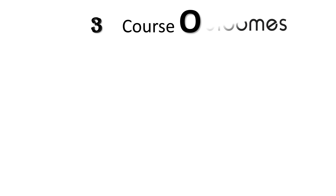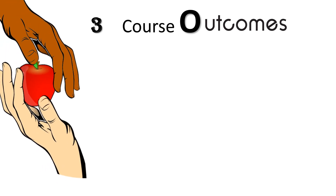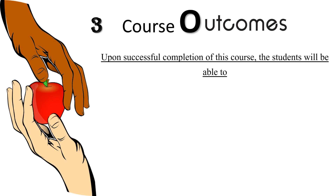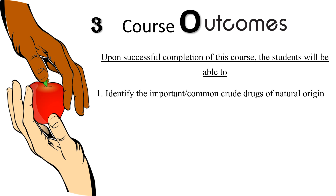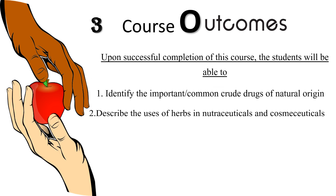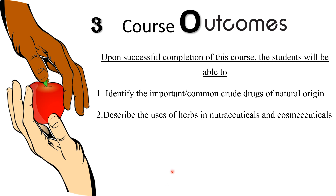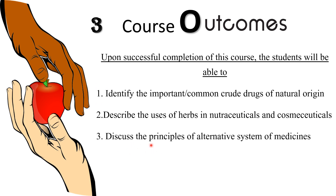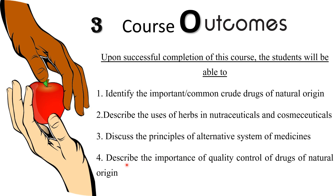The third part: the course outcomes. After successful completion of this course, students will be able to identify important or common crude drugs of natural origin. They can describe the uses of herbs in nutraceuticals and cosmeceuticals. Students can discuss the principles of alternative systems of medicines — Ayurveda, Yoga, Siddha, Yunani, and Homeopathy — and describe the importance of quality control of drugs of natural origin.